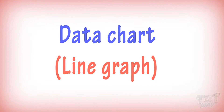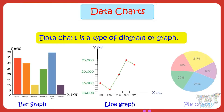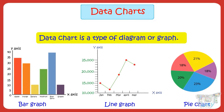First of all, a data chart is a type of diagram or graph where data is represented by various symbols. It can be bars, lines and slices, etc. Charts make it easy to understand large quantities of data and the relationship between parts of data. Data given in the form of charts is read more quickly.